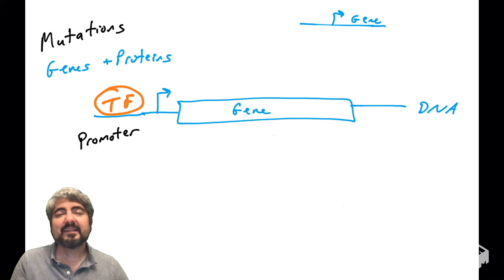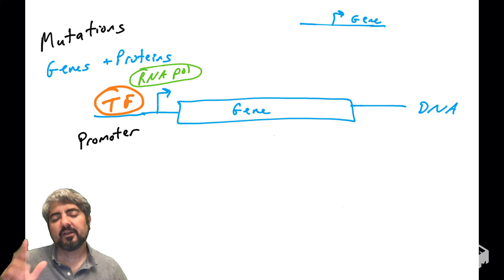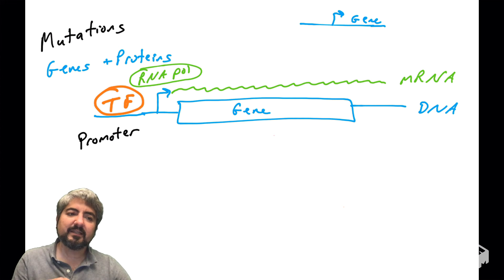What is the enzyme complex that transcribes genes? And it's called, what is it? RNA polymerase. So the RNA polymerase complex here will bind to the transcription start site and it will start transcribing.